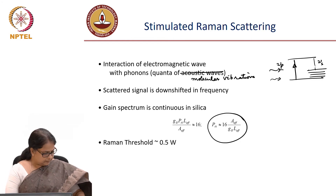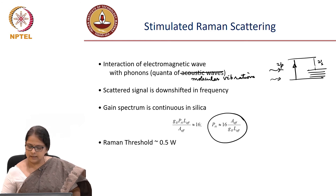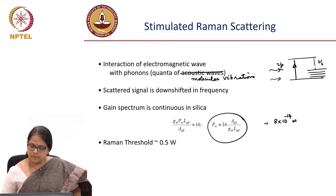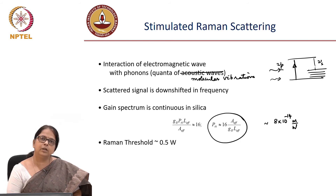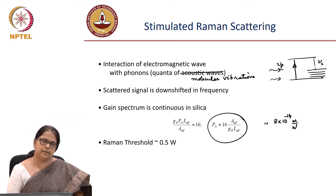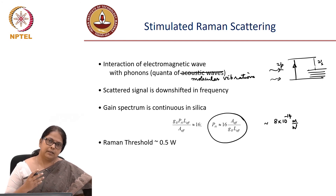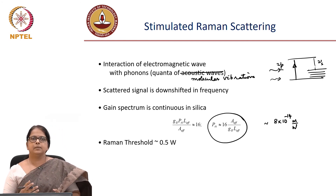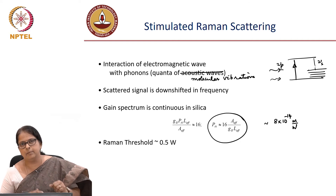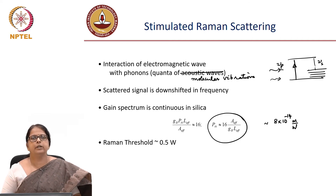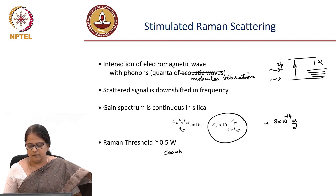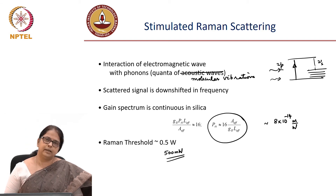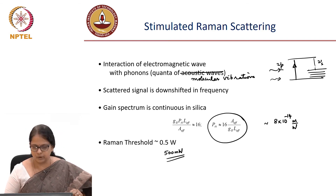The value of g_r is about 8 × 10⁻¹⁴ meter per watt, which is about 2 to 3 orders of magnitude smaller than that of Brillouin scattering. This means in a fiber the strength of the Brillouin process is much more than the strength of the Raman process, and the threshold is about 0.5 watt — 500 milliwatt — whereas in Brillouin scattering the threshold is only 10 milliwatt.